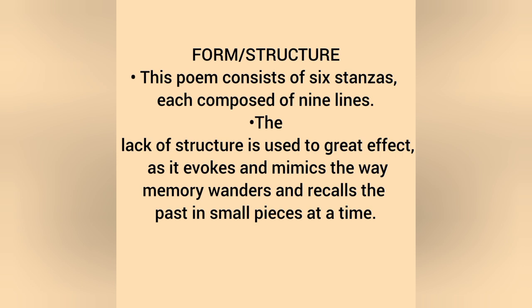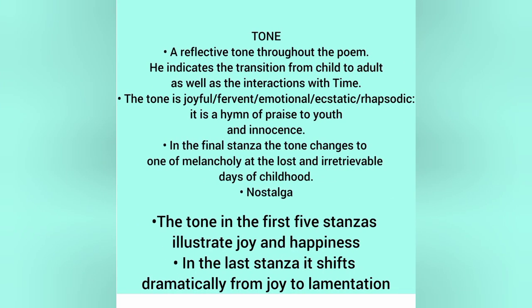We are done with the analysis. Let's get into the form or structure. This poem consists of six stanzas, each composed of nine lines. The lack of structure is used to great effect as it evokes and mimics the way memory wanders and recalls the past in small pieces at a time. The tone in the first five stanzas illustrates joy and happiness. In the last stanza, it shifts dramatically from joy to lamentation — read the first four bullets on your own.